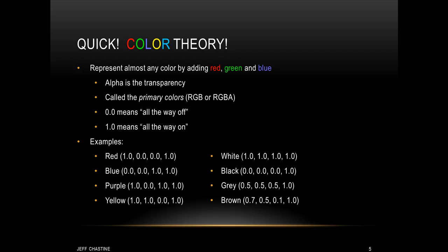You can see a couple of examples. If we wanted the color red, we would have values 1, 0, 0, 1 — and that fourth component is the transparency, meaning that it's fully visible. Blue could look like 0, 0, 1, 1. To show that these channels are independent, you might have 1, 0, 1, 1, which would be the color purple, or 1, 1, 0, 1, which would be the color yellow.